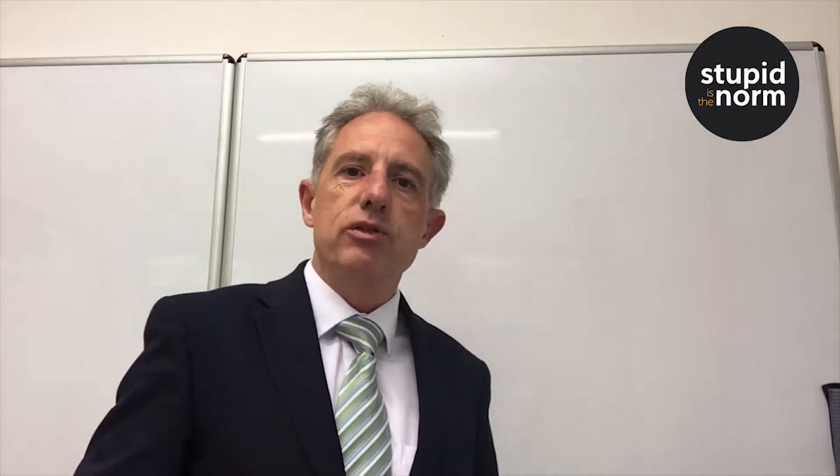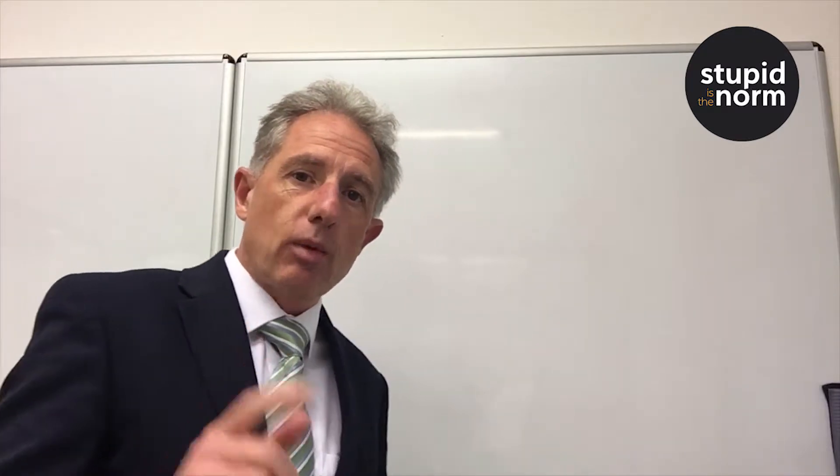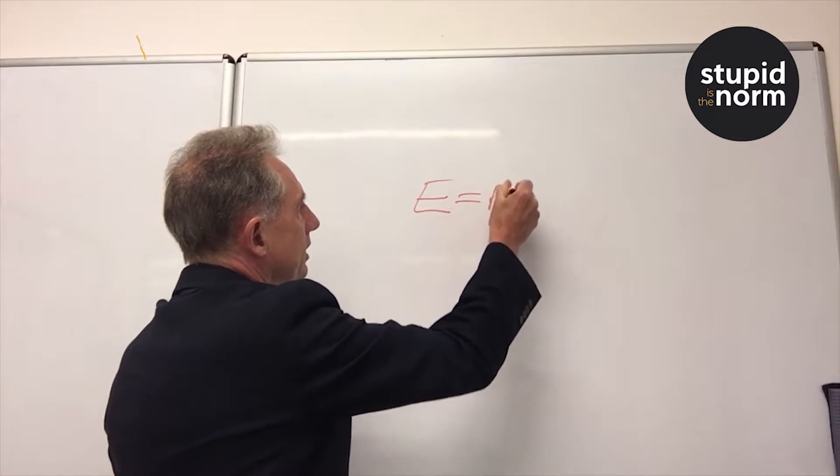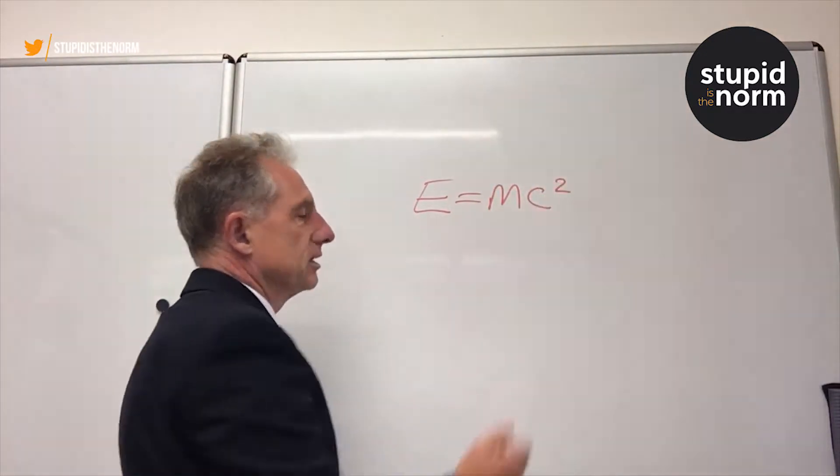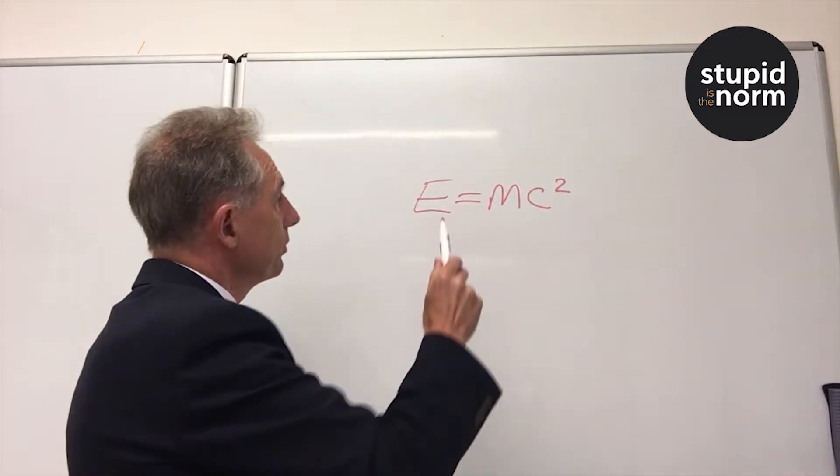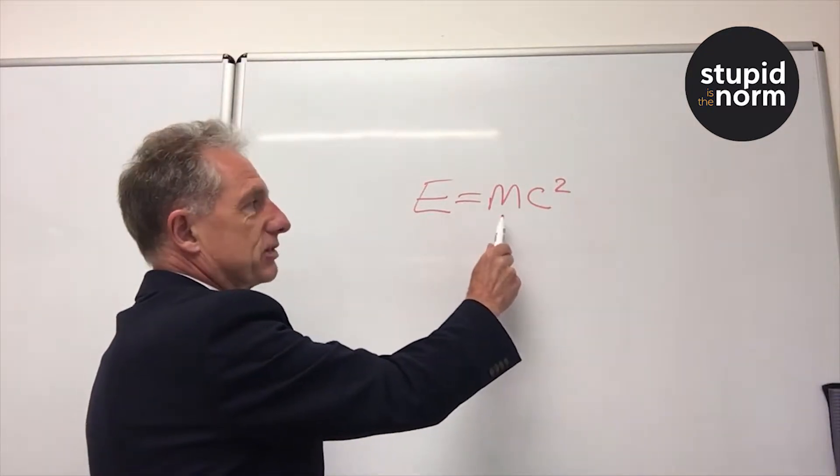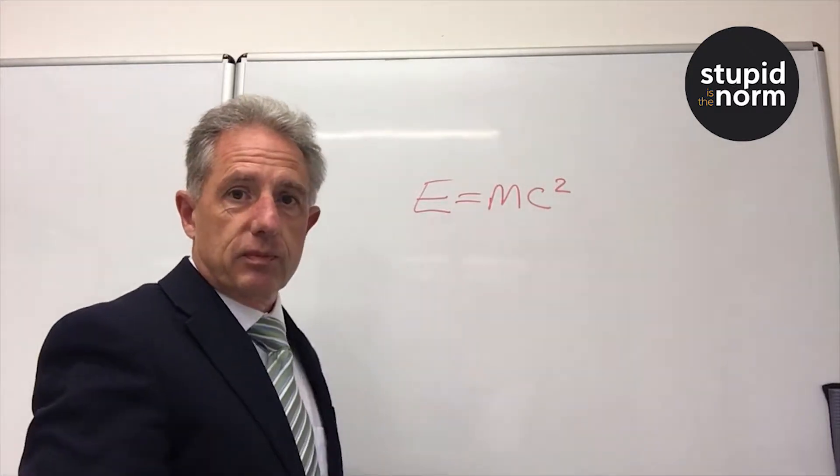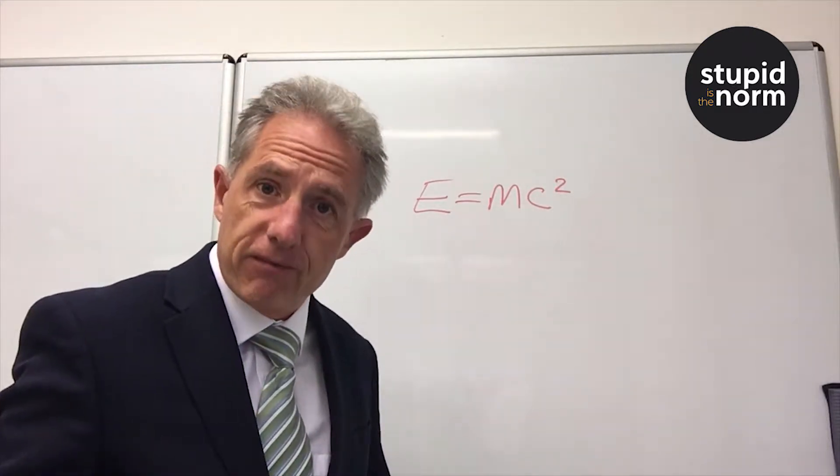Now if I was to ask you what is the most famous equation in the world, you'd probably say E equals MC squared. It actually stands for, just in case you don't know, energy is equivalent to the mass of an object multiplied by the speed of light squared. So you don't just get finance, you get physics as well here.